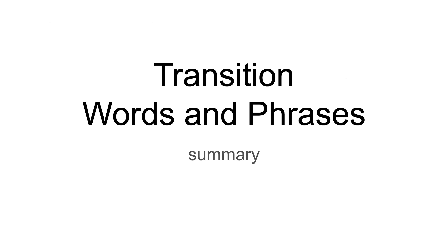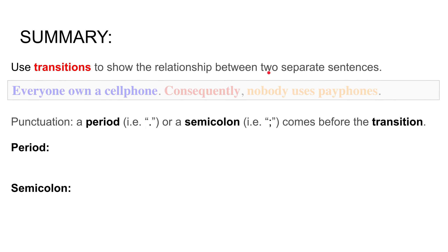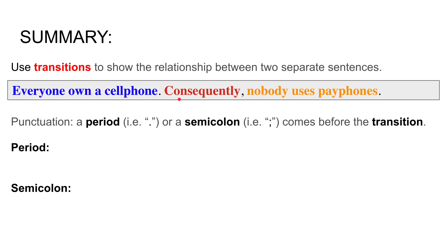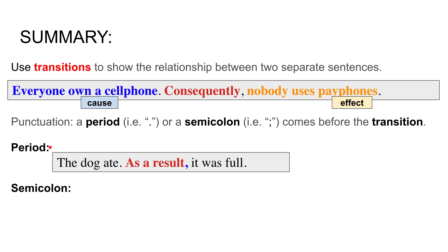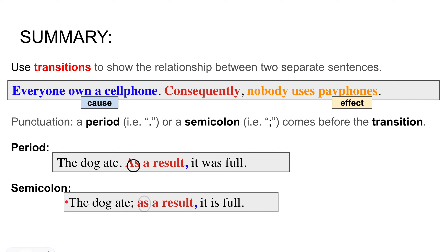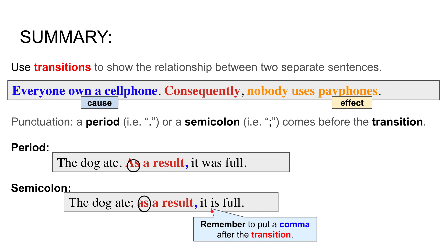Here's a quick summary of everything we learned about transition words and phrases. We use transitions to show the relationship between two separate sentences — for example: 'Everyone owns a cell phone. Consequently, nobody uses pay phones anymore' — a cause and effect relationship. Regarding form and punctuation: we can use a period before the transition, for example, 'The dog ate. As a result, it was full.' We can also use a semicolon: 'The dog ate; as a result, it was full.' Remember to put commas after transitions.